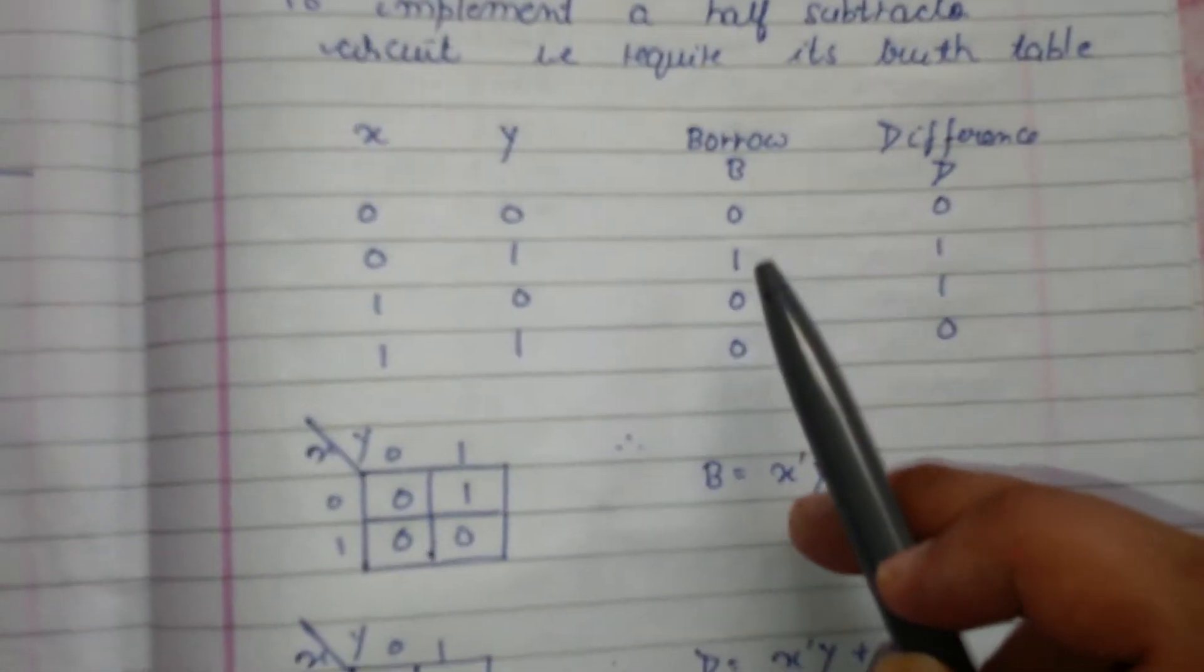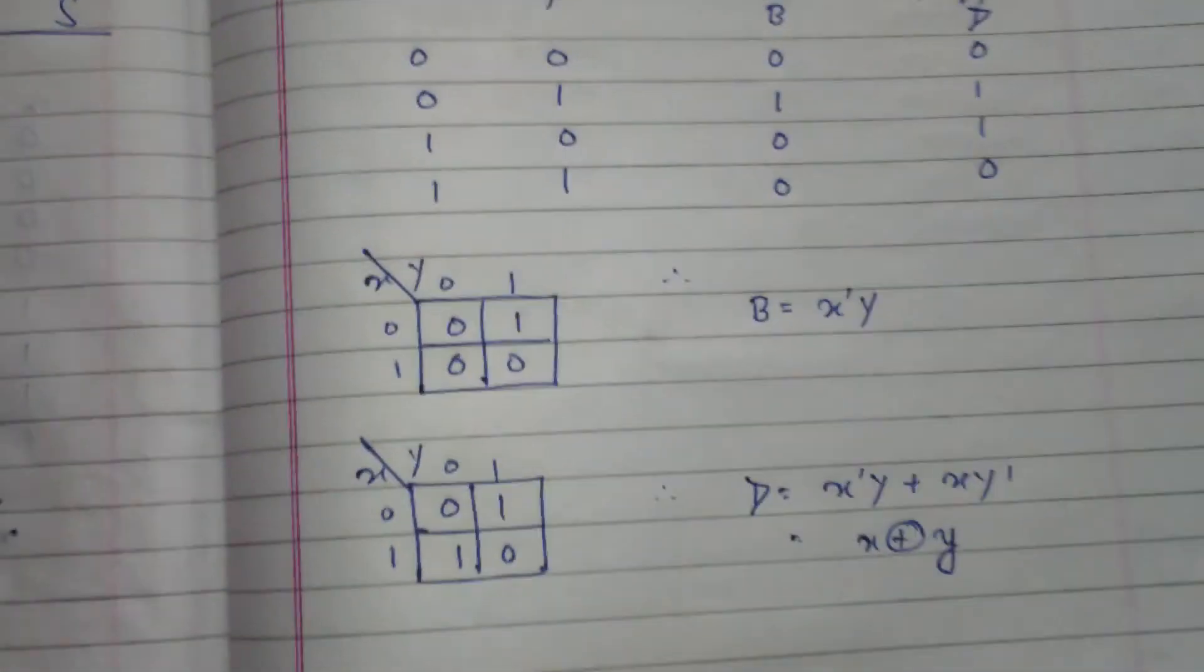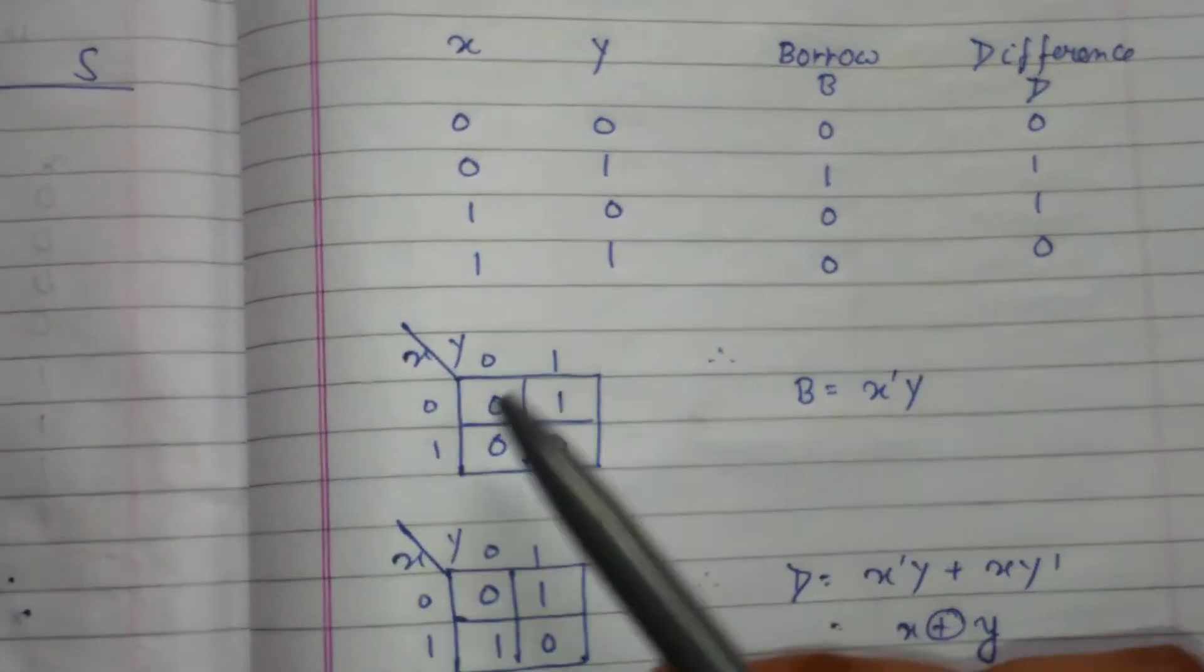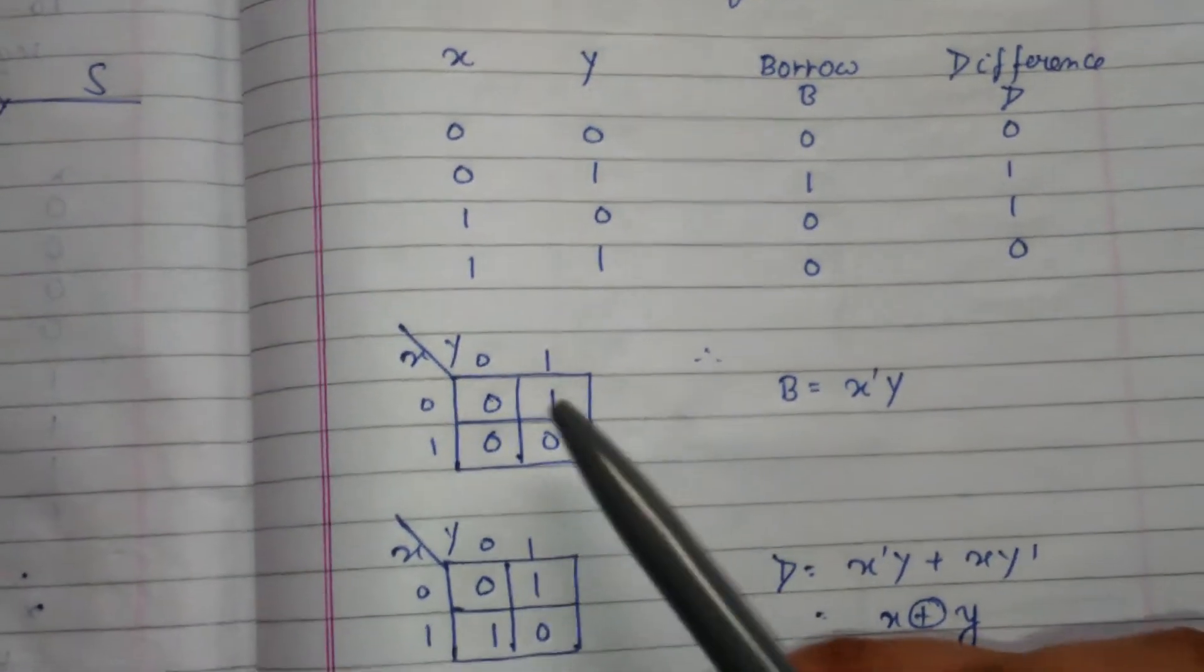Now simply we will make the expressions for borrow and difference by using the K-map. Now solving using K-map, here I have the expression for borrow. Zero one zero zero, zero one zero zero. I have made this, and solving this we get X complement and Y, so borrow is X complement Y.